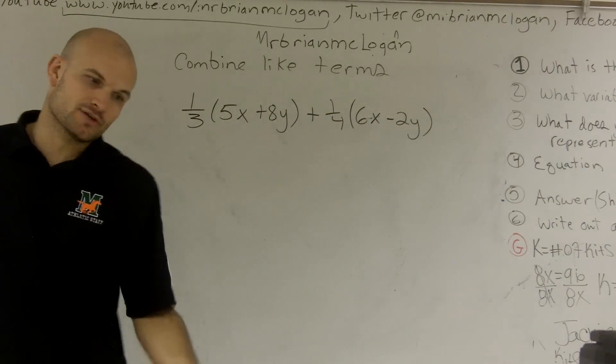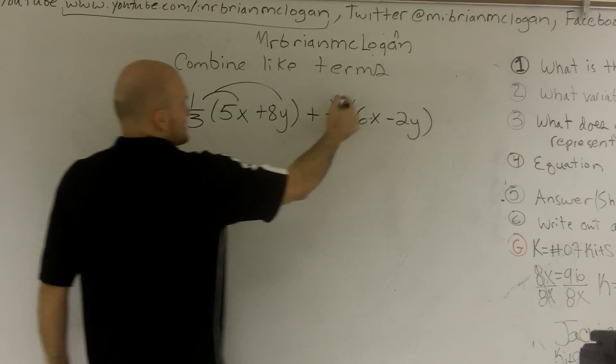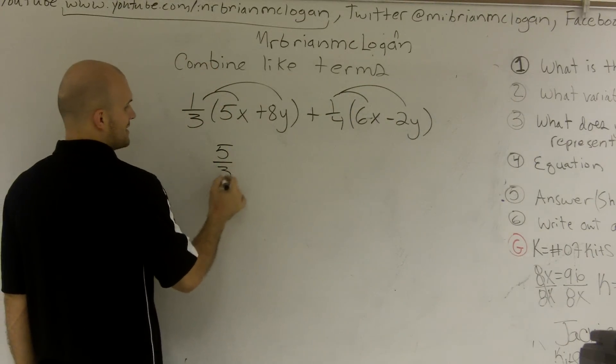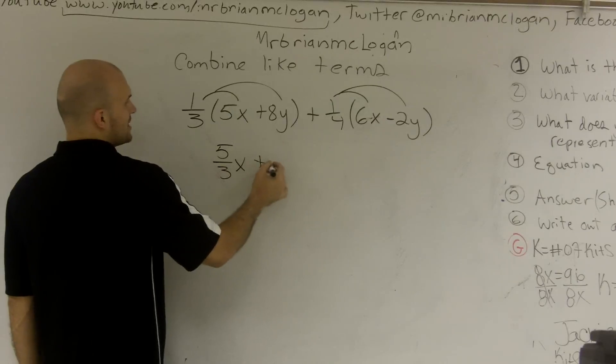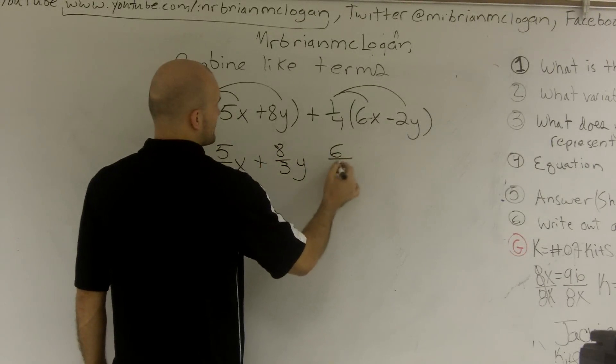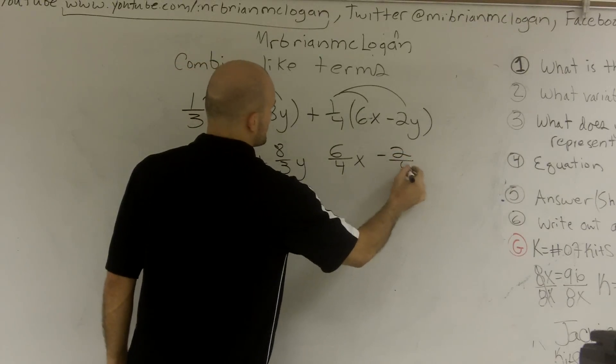There is one way you can do this, and that's to use the distributive property. If I did the distributive property, let's just look at the x's real quick. I'd get 5/3x plus 8/3y. Then here, I get 6/4x minus 2/4y.